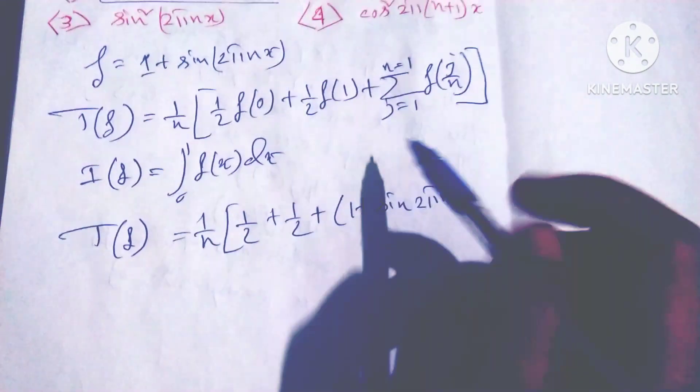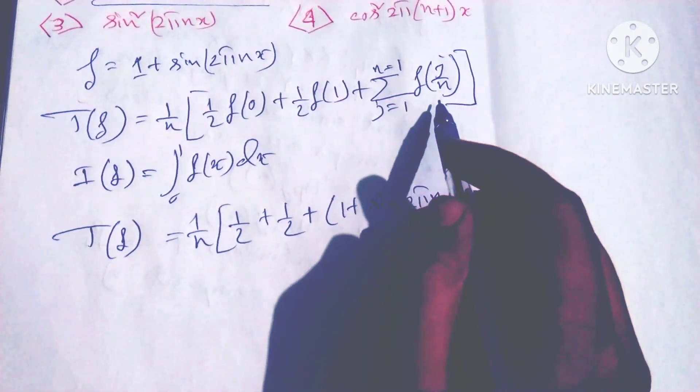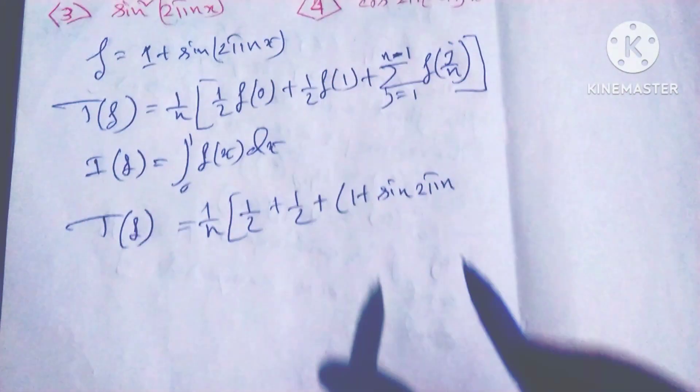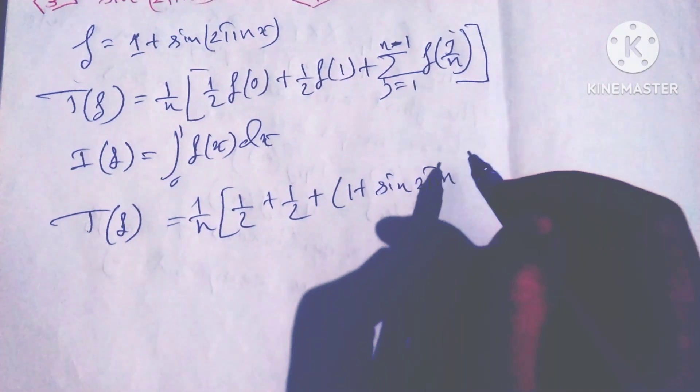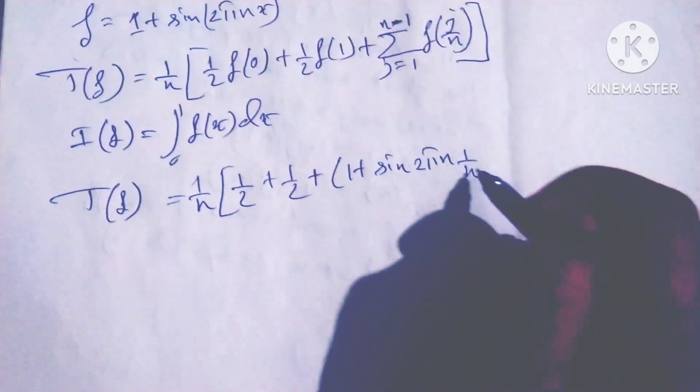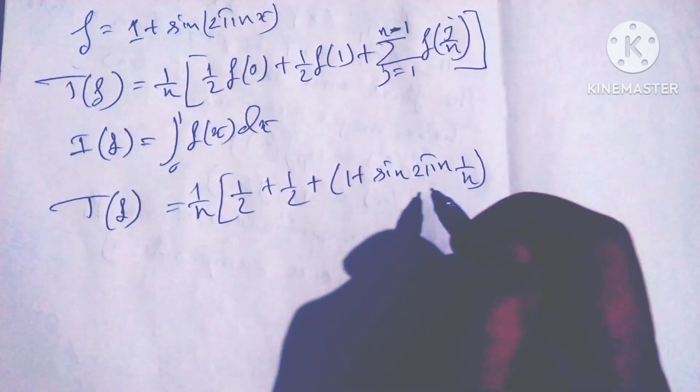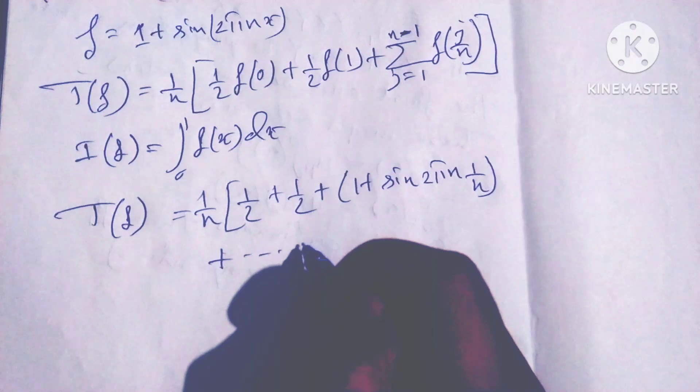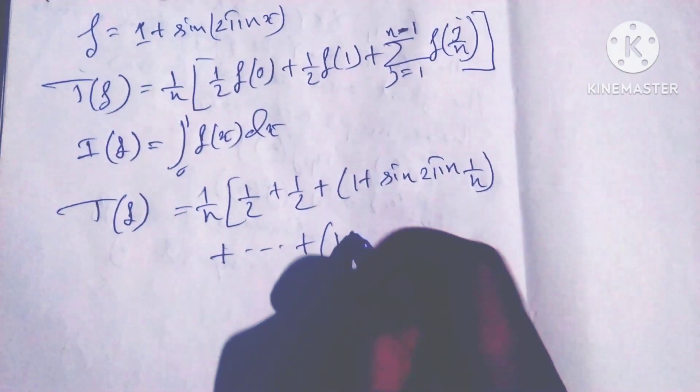j equals 1 to n, n equals 1. So j equals 1 to n. Sorry, n minus 1. j equals 1 to n minus 1.